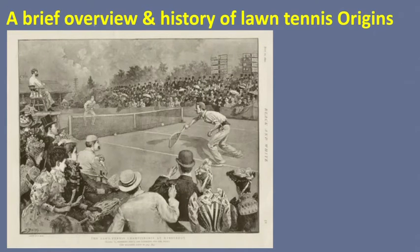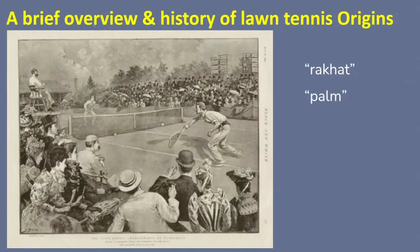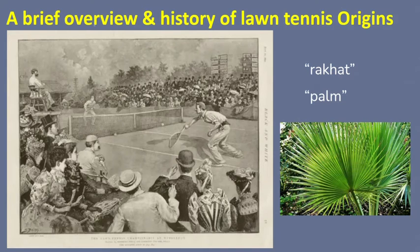Now we will discuss about the brief overview and history of lawn tennis origins. Tennis is said to have originated in ancient Egypt. According to several historians, the term 'racket' is said to have originated from the Arabic word 'raqqat,' which means palm. However, the most widespread belief is that tennis was first played by French monks in the 11th and 12th centuries, and then in 1872 the first lawn tennis club was founded and tennis started to develop into a professional sport.